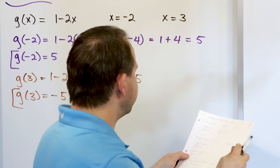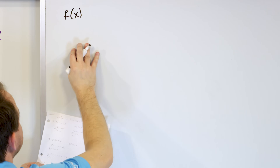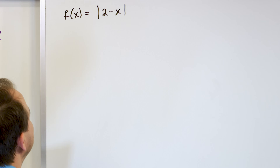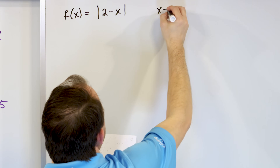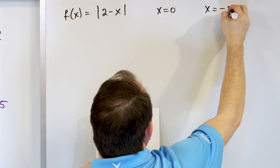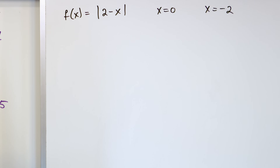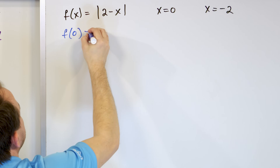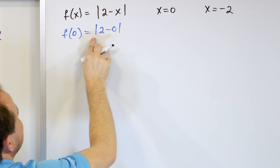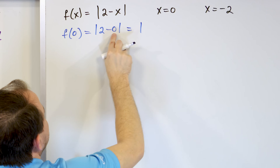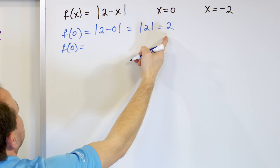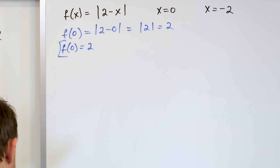We're going to continue with slightly more complex functions each time. Let's say we have the function f of x as the absolute value of 2 minus x. We have an absolute value in the mix and want to evaluate it when x equals 0: f of 0 is the absolute value of 2 minus 0, which is the absolute value of 2, and that's just 2.